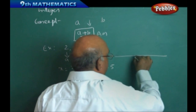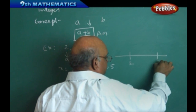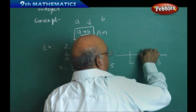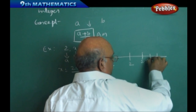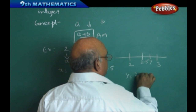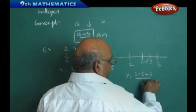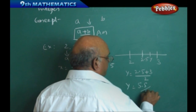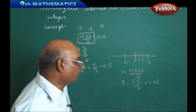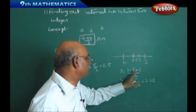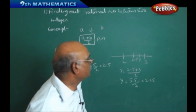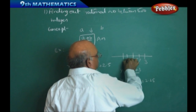On the real number line, if this is 2 and this is 3, then 2.5 is in between. Now, I want to find a rational number between 2.5 and 3. Taking y = (2.5 + 3)/2 = 5.5/2 = 2.75. Wait — recalculating: 2.5 + 3 = 5.5, divided by 2 gives 2.75. But computing further: y = 2.25 is obtained between 2 and 2.5.